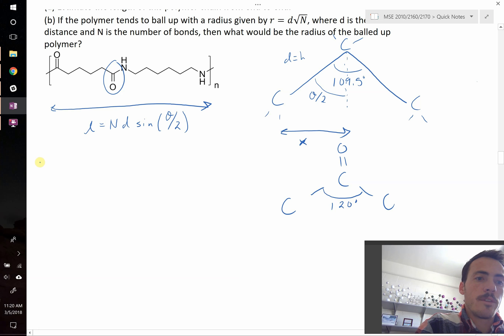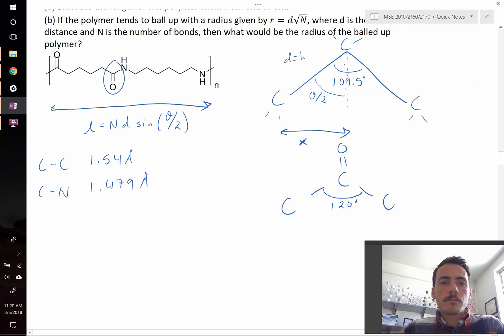And now we need to just, last thing we need to do is figure out that a carbon carbon bond is going to have a distance of 1.54 angstroms, if it's a single bond. And a carbon nitrogen bond is pretty close, actually. It's 1.479 angstroms. So pretty close, but slightly less.